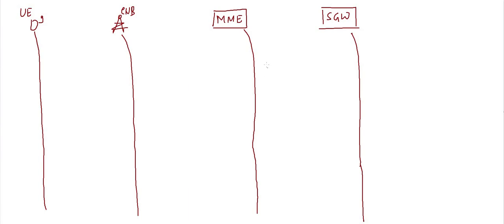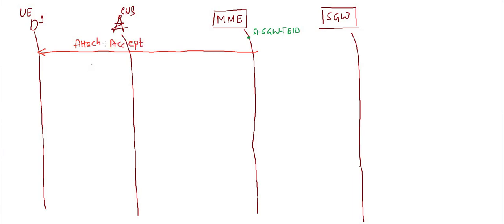In the last lecture, we saw that MME received the Create Session Response from SGW and MME received a TEID known as the S1 SGW TEID, which is stored at the MME. Now MME will send the Attach Accept message to the UE. Let me tell you first the content of this Attach Accept.